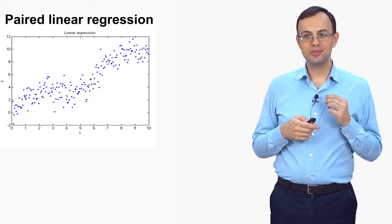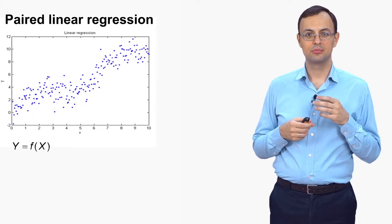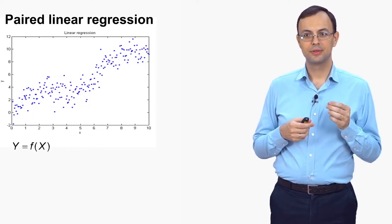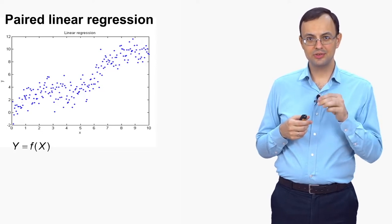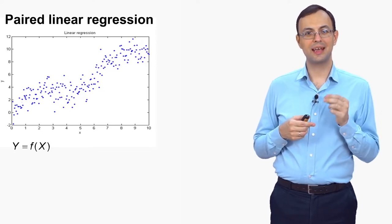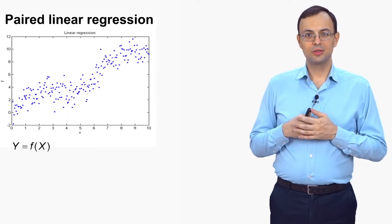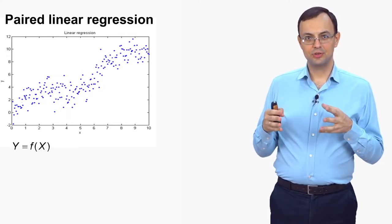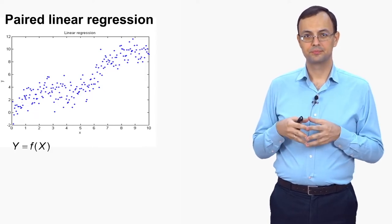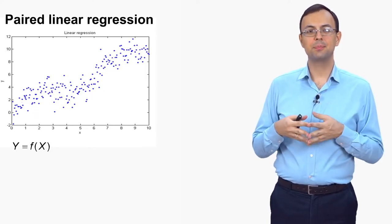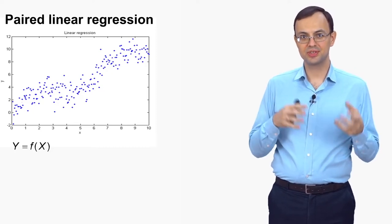Mathematically, this means we want to get a function such that y equals f of x, and we will use this function to predict y when x is given. We want to use the observed data to construct this function that will help us predict y.